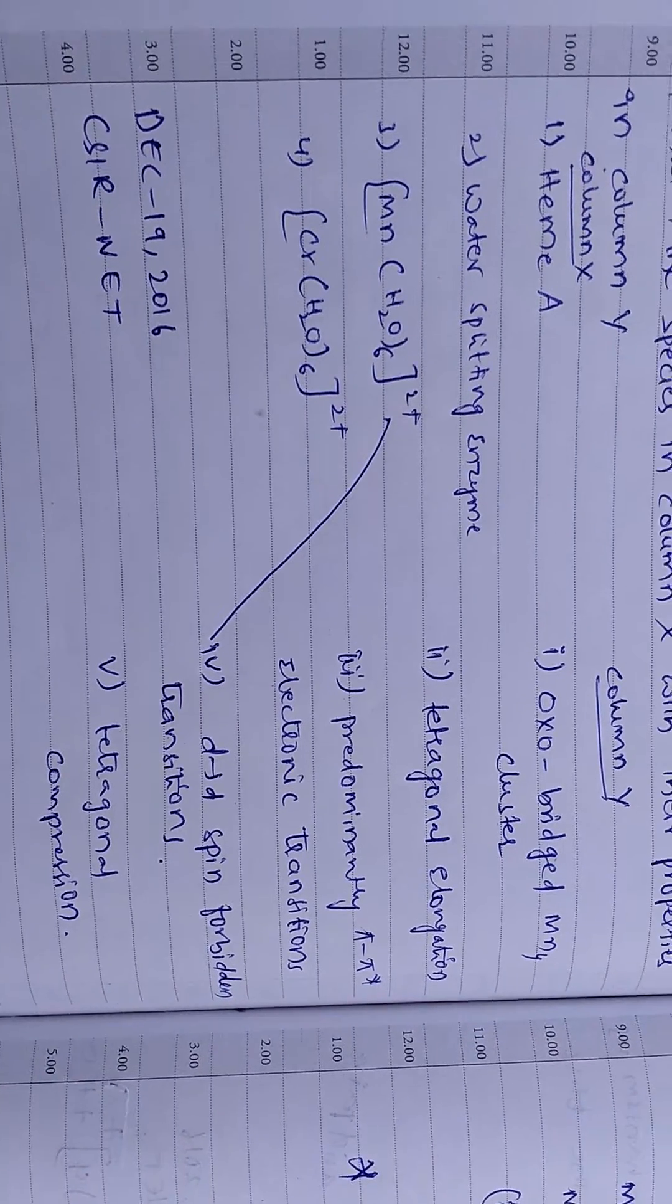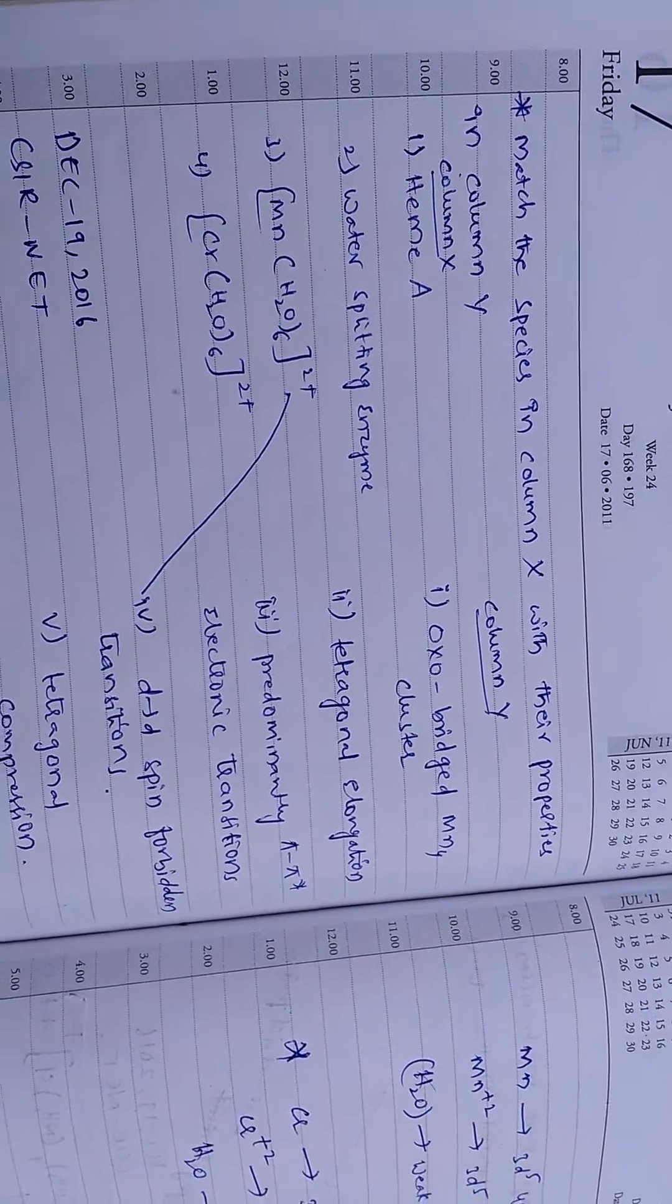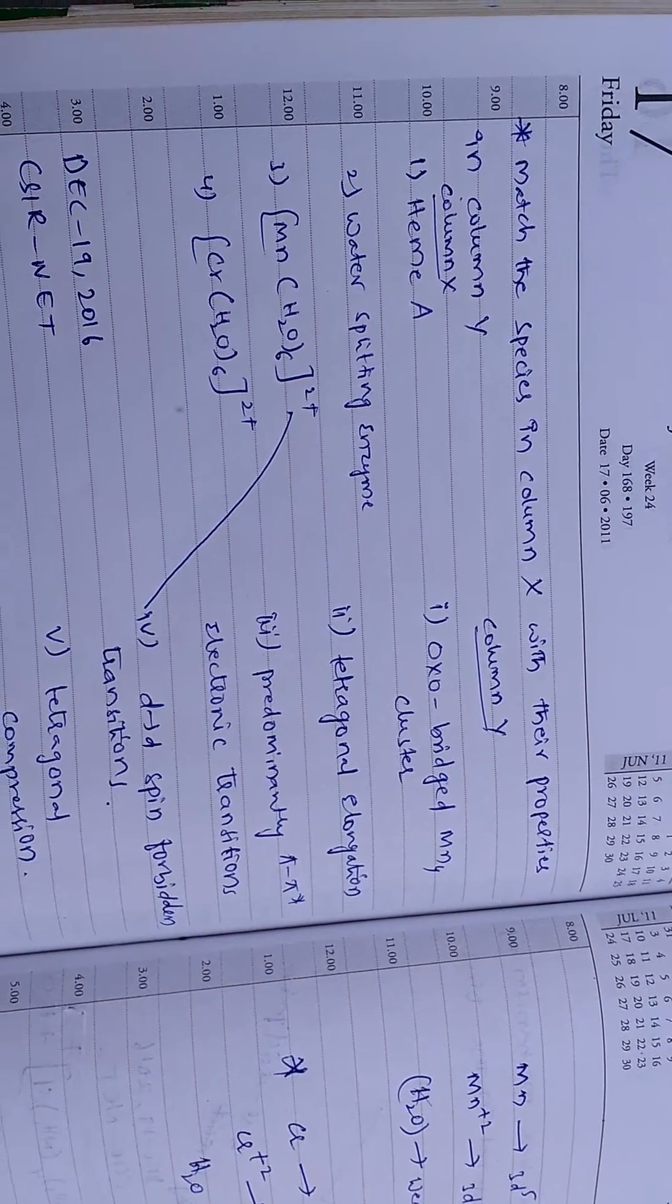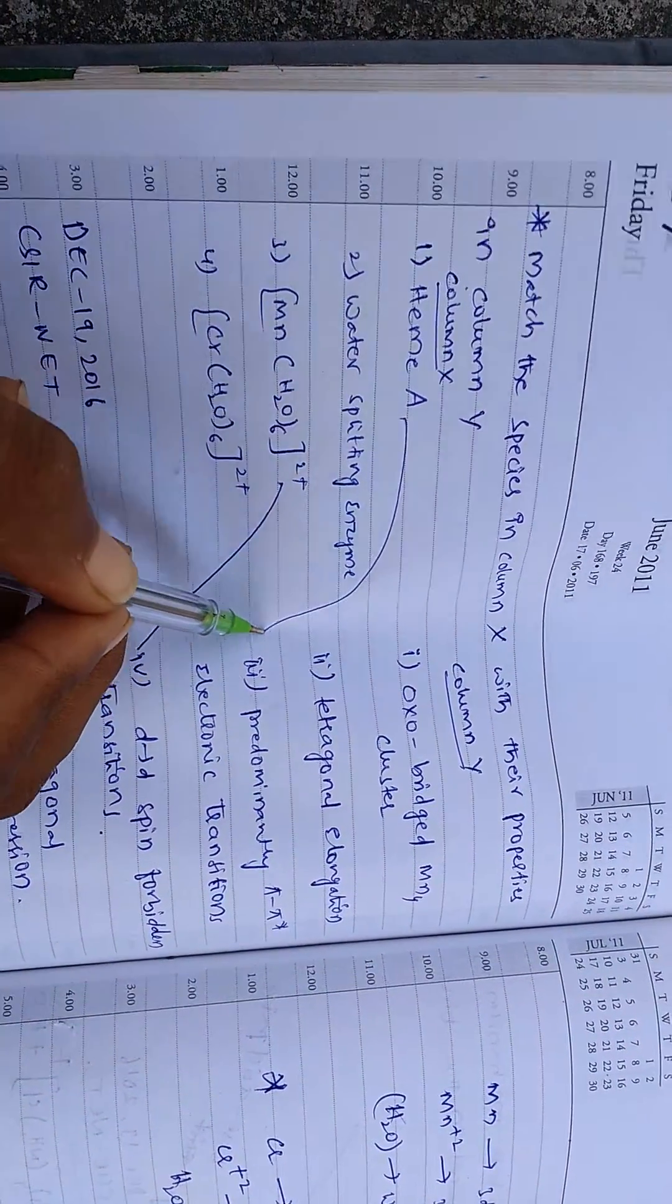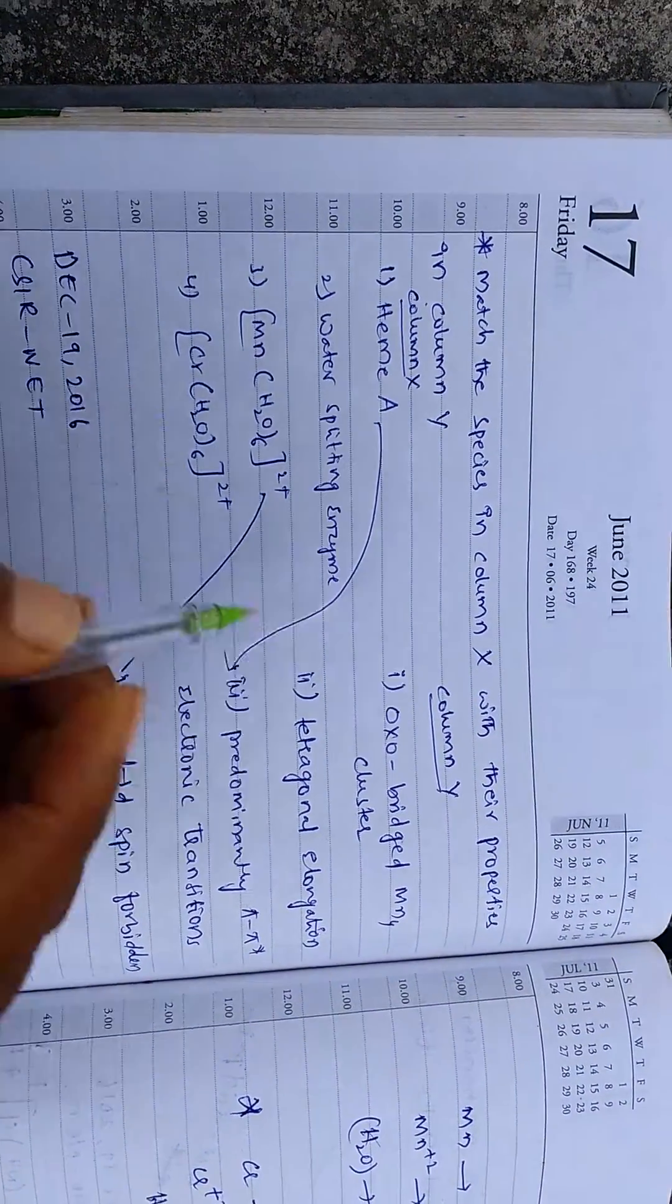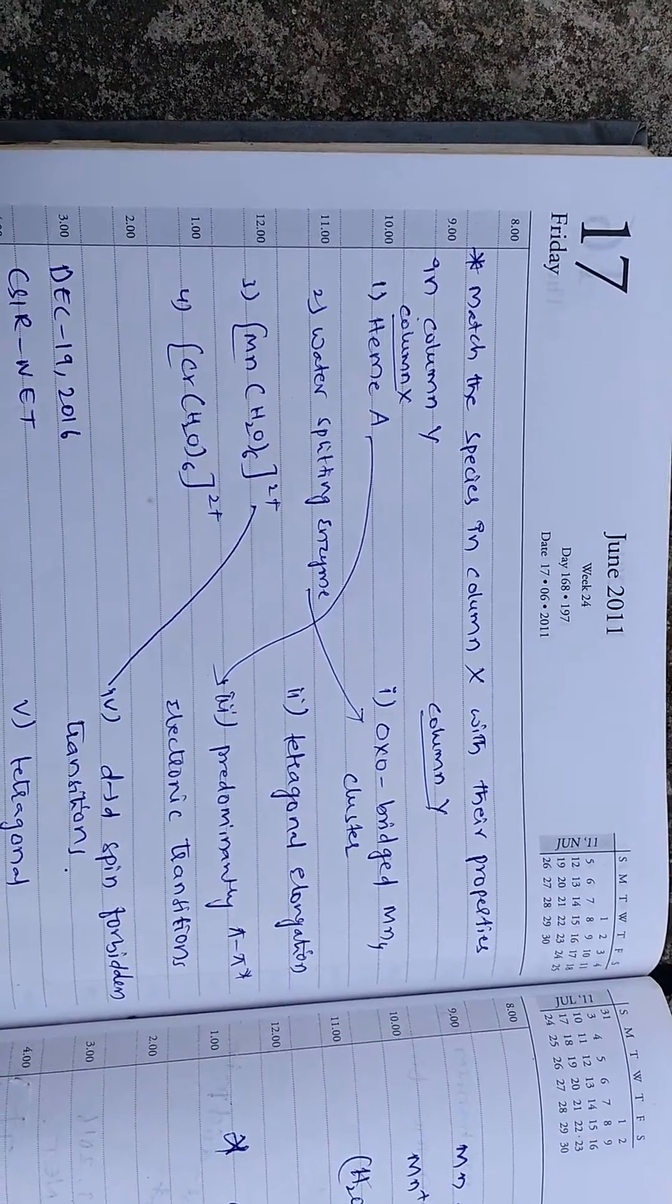So in this, heme A has predominantly d-d star electronic transitions, and water splitting enzyme has oxo-bridged MN4 clusters.